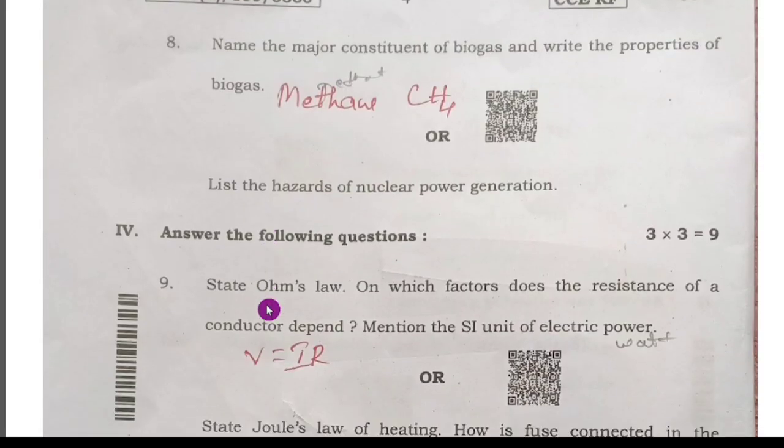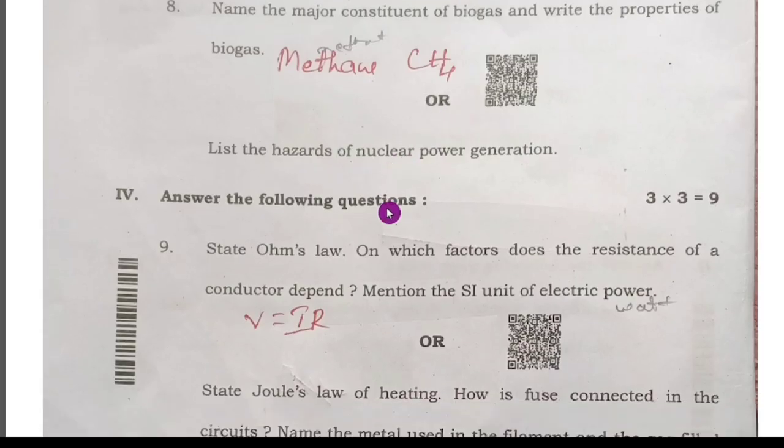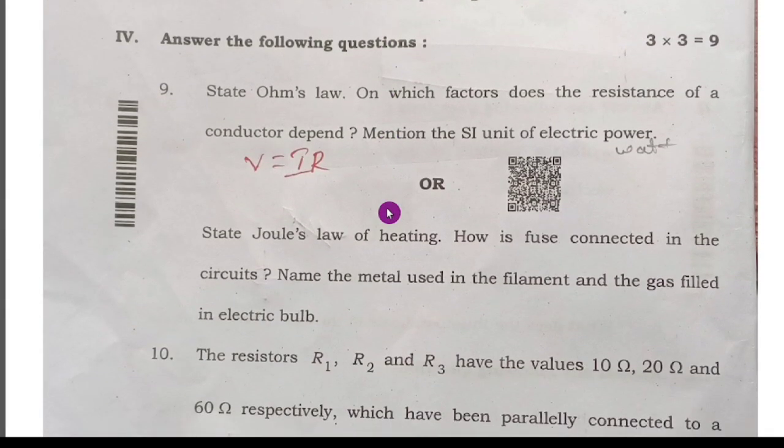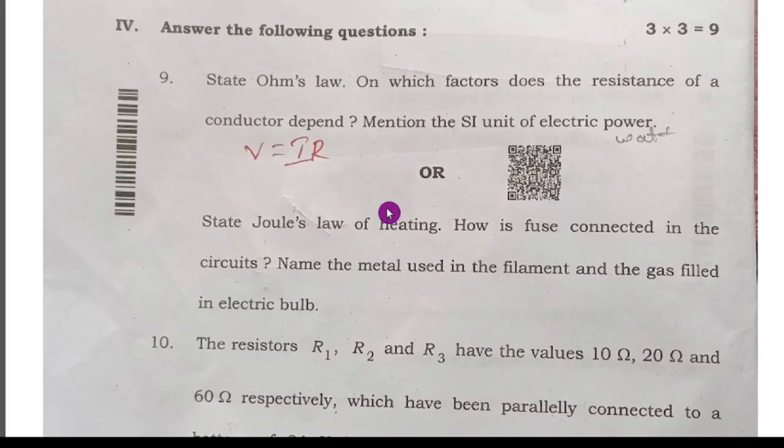Next, eighth question: name the major constituents of biofuels and write the properties of the biofuels. The major constituent is methane CH4. And here one more option is there, you can write the option. Next one is 3 marks question. State Ohm's law, very easy. V equals IR. You have to write the definition.